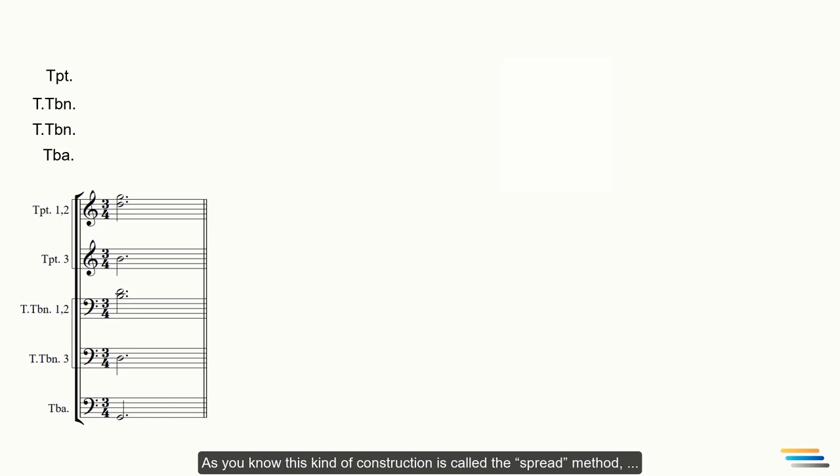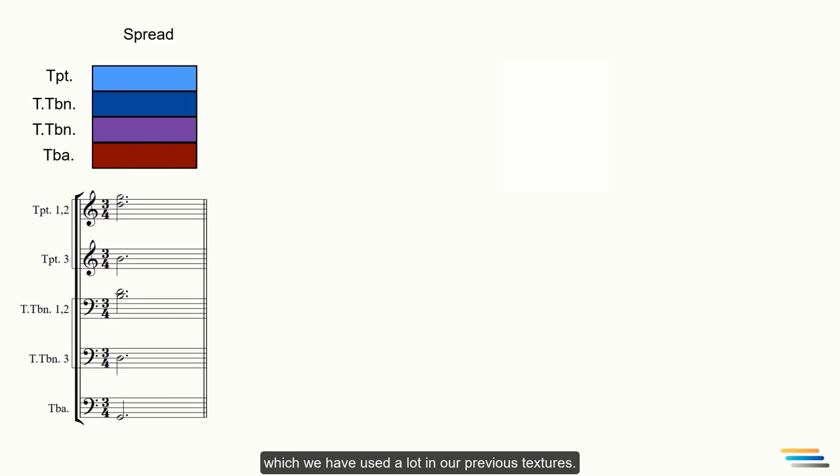So, the chord of the first bar is the G major. First, let's share the given chord within the brass section. This will not be difficult for you if you have learned the chord voicing well. You can use different chord voicing techniques like interlocking, overlaying, enclosure or overlapping. Since the French horns play the melody, we'll use the remaining three trumpets, three tenor trombones and the tuba. For this one, let's use the overlaying technique. As you know, this kind of construction is called the spread method, which we have used a lot in our previous textures. For clarity of understanding, I show the instruments in different colors. But don't confuse these colors with the tone color of the instruments. This is just for explanation and is randomly selected. Okay, in this step, the chord looks like the whole cube.